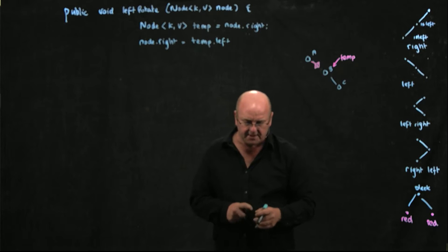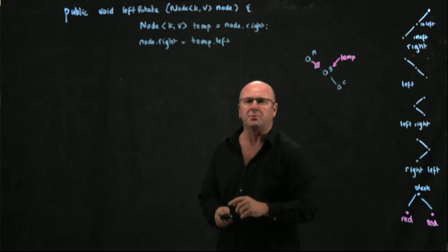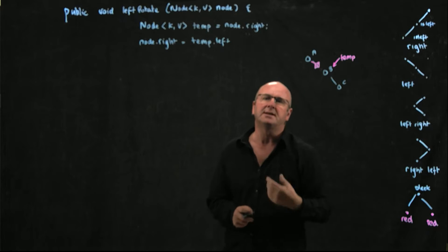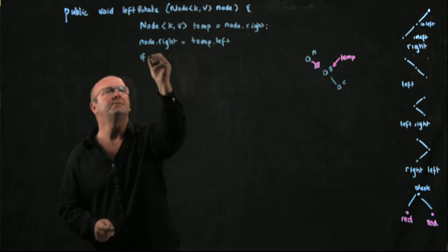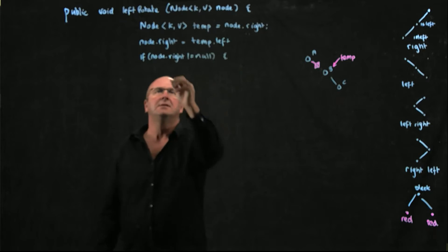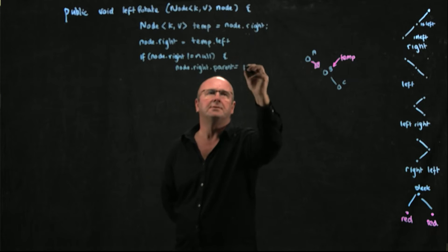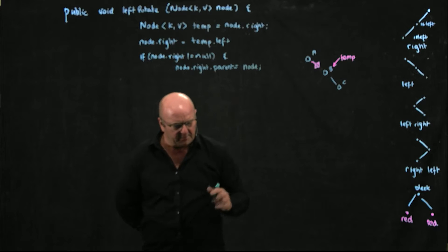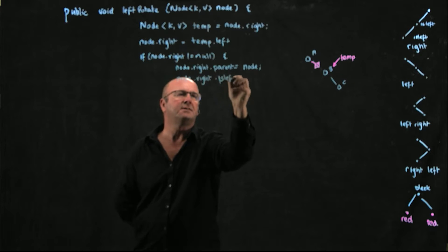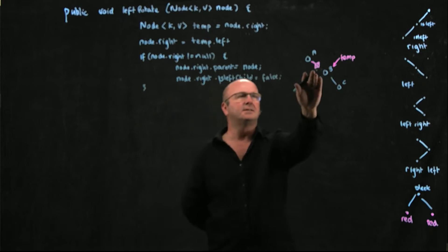One of the things we need to correct is our parent pointers. We need to know if node dot right is not null, and if so, set its parent pointer. We also need to update the isLeft pointer because it was B's left child and now it's A's right child. So if node dot right is not null, we update its parent pointer: node dot right dot parent points to node, and node dot right dot isLeftChild is equal to false.